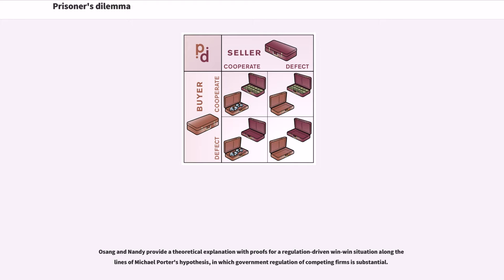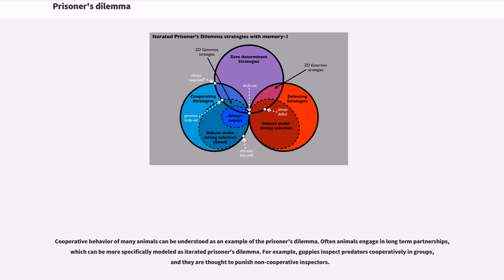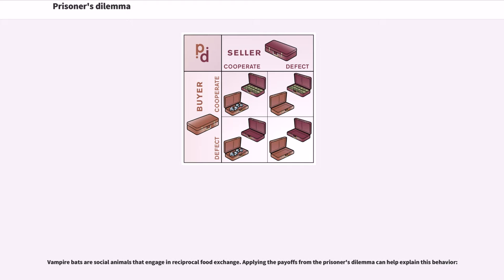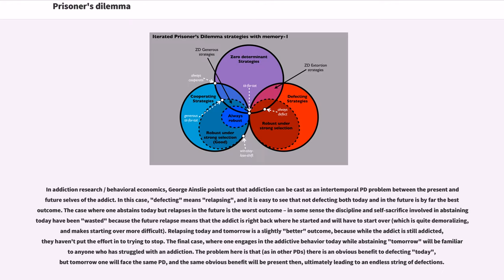Cooperative behavior of many animals can be understood as an example of the prisoner's dilemma. Often animals engage in long-term partnerships, which can be more specifically modeled as iterated prisoner's dilemma. For example, guppies inspect predators cooperatively in groups and are thought to punish non-cooperative inspectors. Vampire bats are social animals that engage in reciprocal food exchange. Applying the payoffs from the prisoner's dilemma can help explain this behavior. In addiction research and behavioral economics, George Ainslie points out that addiction can be cast as an intertemporal PD problem between the present and future selves of the addict, where defecting means relapsing.